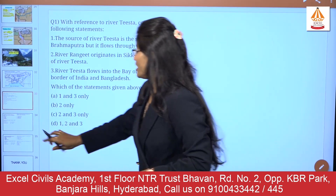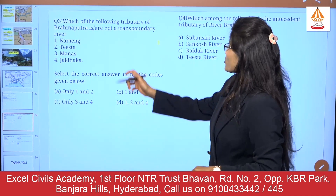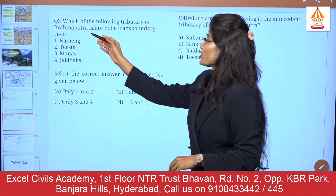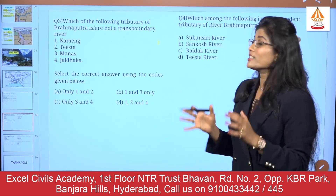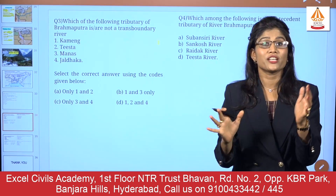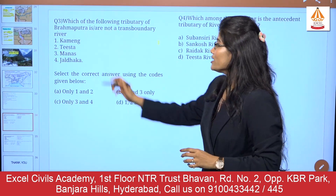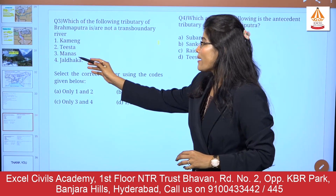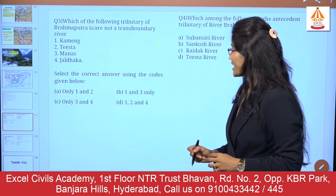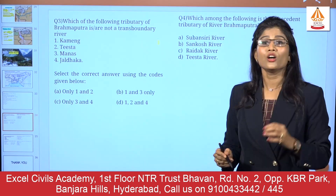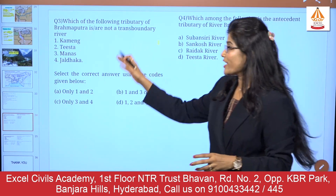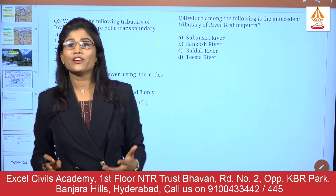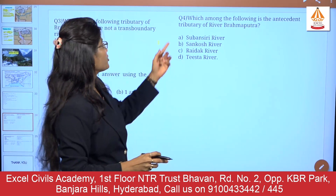The next question: which of the following tributaries of Brahmaputra are not a trans-boundary river? Options are Kameng, Tista, Manas, and Jal Dhaka. Select the correct answer using the code given below. This is a very interesting question — you need to memorize the seven major right bank tributaries.